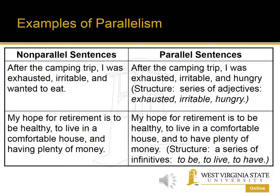Next: 'My hope for retirement is to be healthy, to live in a comfortable house, and having plenty of money.' We have a series of infinitive phrases. 'Is to be healthy, is to live in a comfortable house, is having plenty of money' — that last one doesn't work. The fix: 'My hope for retirement is to be healthy, to live in a comfortable house, and to have plenty of money.'